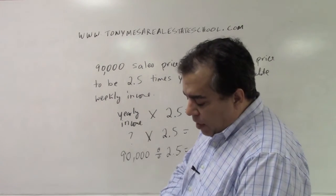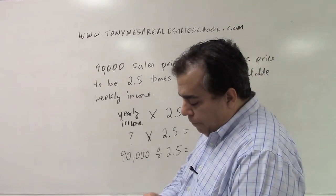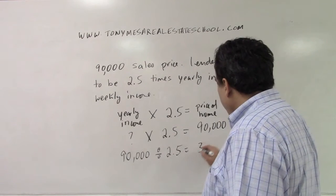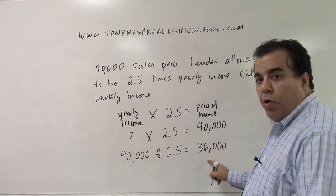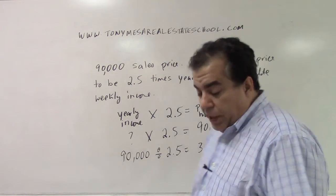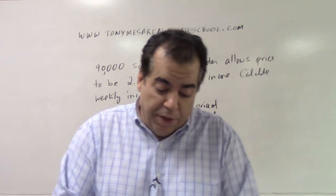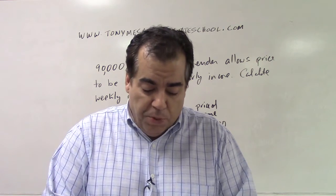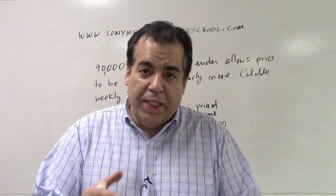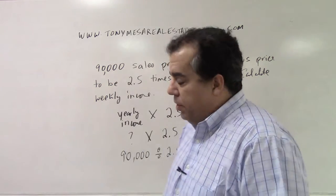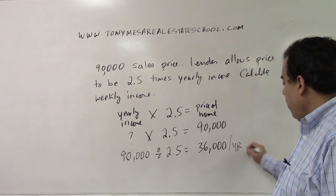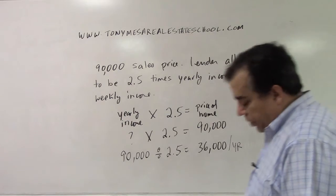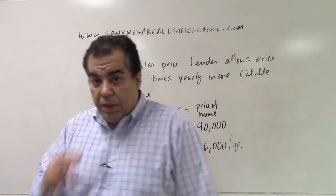So if you take $90,000 divided by 2.5, you wind up getting $36,000. That is the income you must have per year. And look, you can double check your answer. You can now say, okay, if I make $36,000 a year times 2.5, magically $90,000. That's the price of the home. So that's how much you have to make per year for the lender to say you can buy this house. Now, let's take a step back.